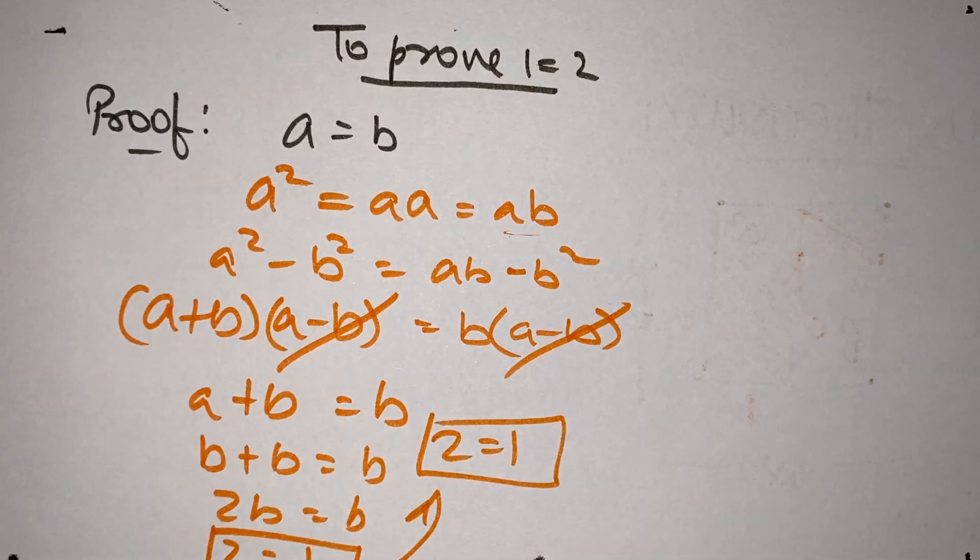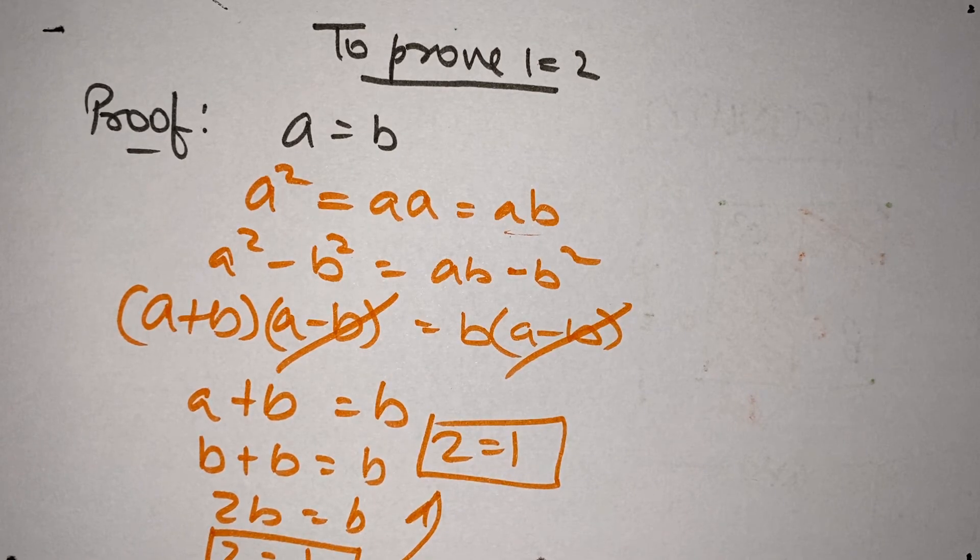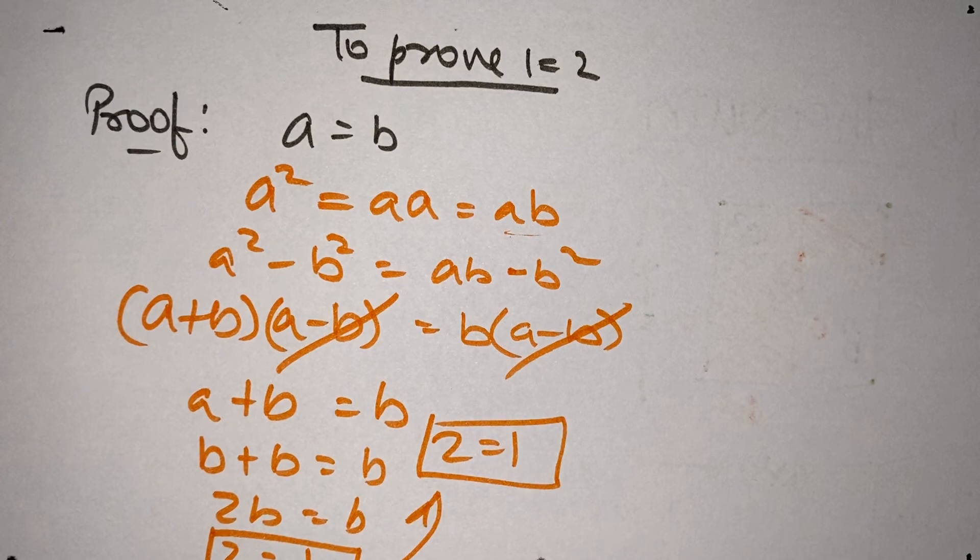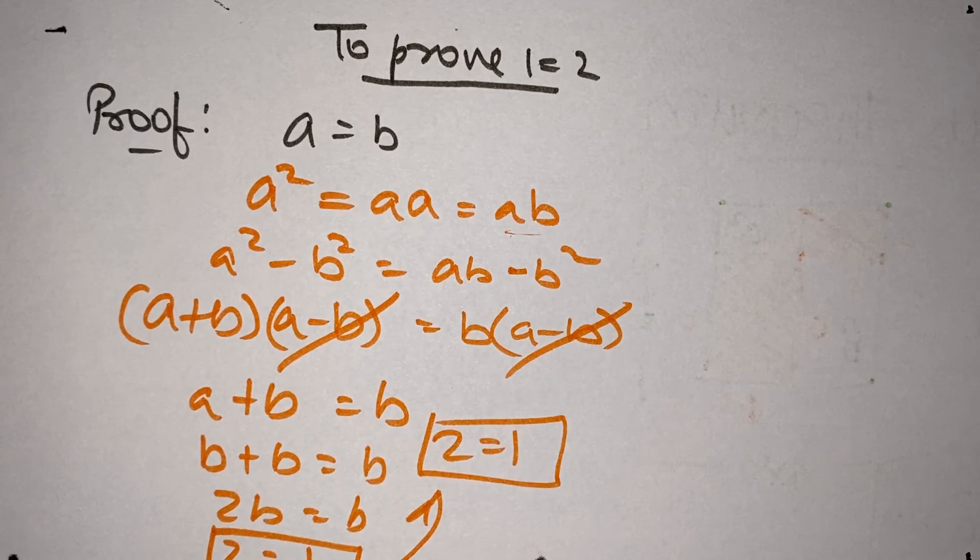Hence, proved. Is there something wrong here? Yes, obviously. We know that 2 is not equal to 1, but how is this coming true? Let me tell you the problem.